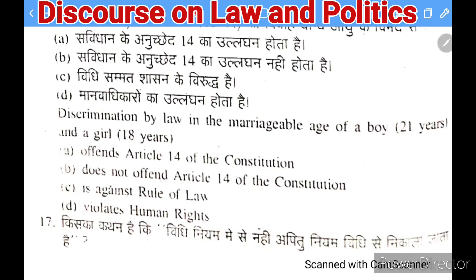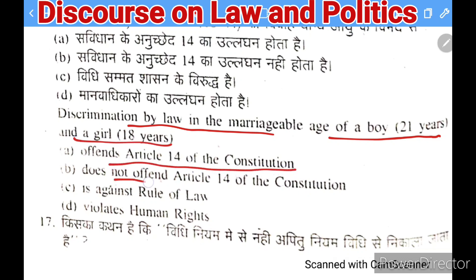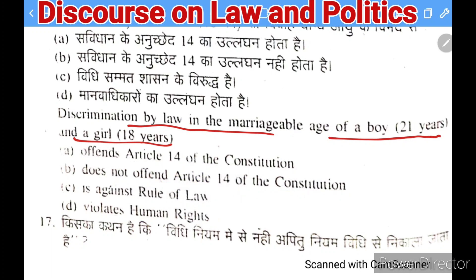Next question: determination by law of marriageable age — 21 years for a boy and 18 years for a girl — (A) offends Article 14, (B) does not offend Article 14, (C) is against the rule of law, (D) violates human rights. The right answer is B — it does not offend Article 14 because it is based on reasonable classification, and there is justification for the different ages.